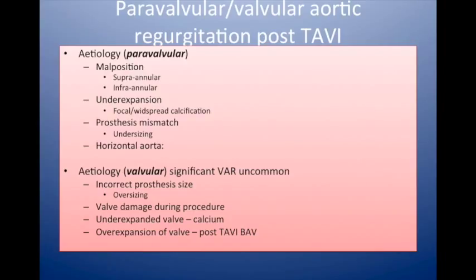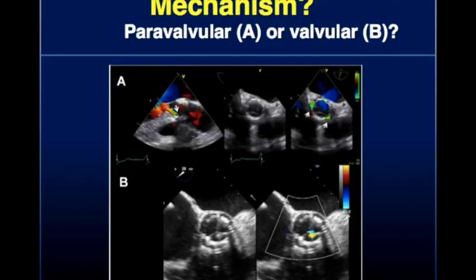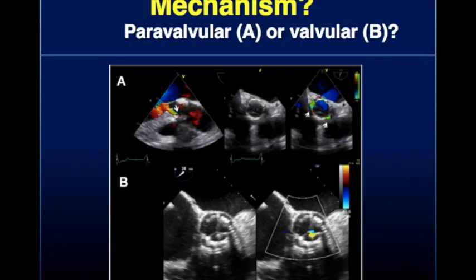We need to know whether it's valvular or paravalvular. Grading of AR is pretty much as you would normally do it — there's no big difference between surgical valves and TAVI valves. For quantification of valvular aortic regurgitation, you look at the jet height in the LVOT, pressure half-time, and measure the vena contracta. Doing that by 3D color flow is probably more accurate than 2D color according to some recent studies. You can also measure the effective regurgitant orifice area by planimetry of the vena contracta.